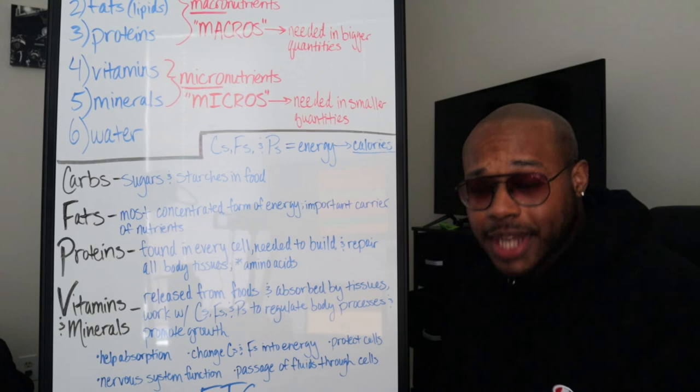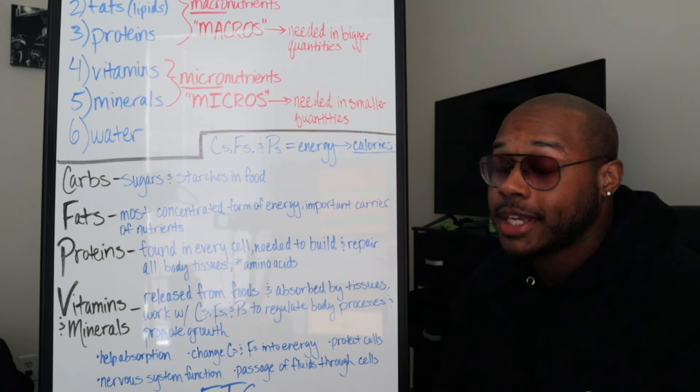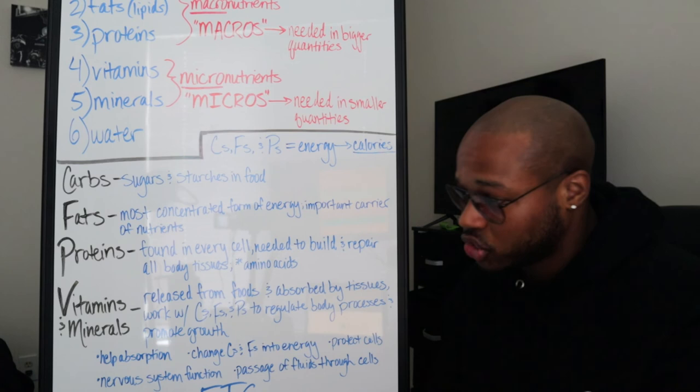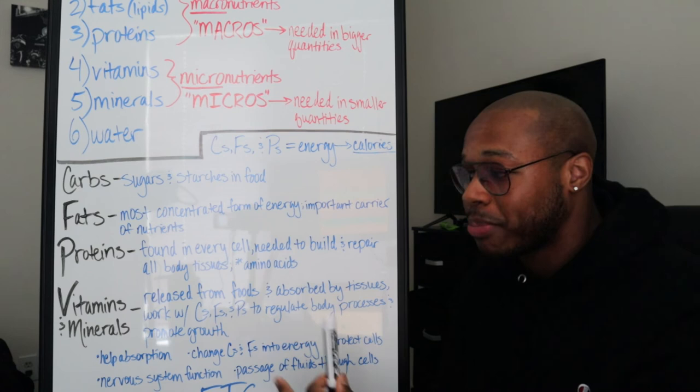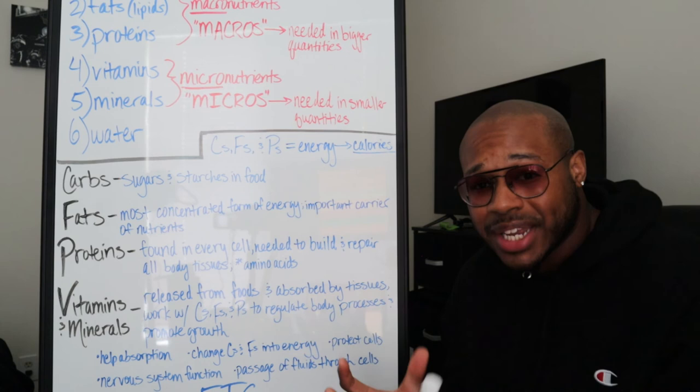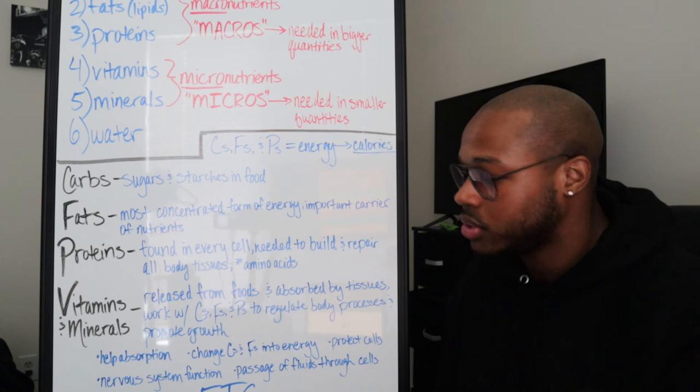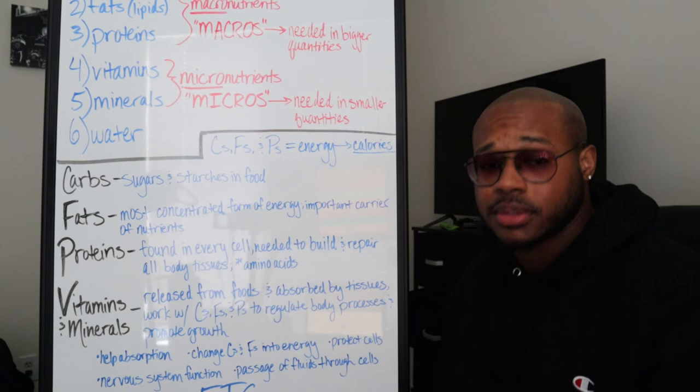And now last but not least we're gonna get into the vitamins and minerals. Now vitamins and minerals can get extremely complicated, real complex. That could be a video on its own, but we're gonna keep it short and sweet. So vitamins and minerals, as you see, are released from foods and are absorbed by the tissues. So unlike your macronutrients, the vitamins and minerals are not broken down from food - they're released by the food and then absorbed straight into the tissues. And they work with your macronutrients in order to regulate certain body processes.